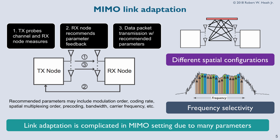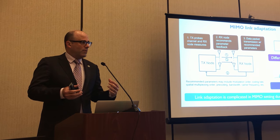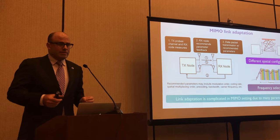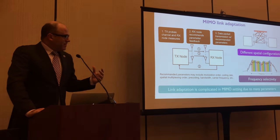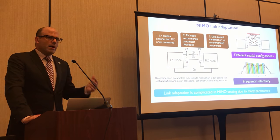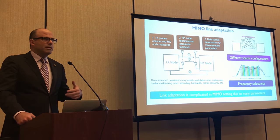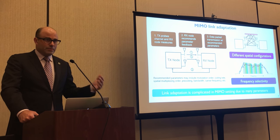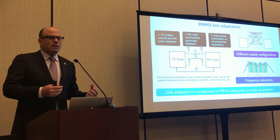In MIMO communications, this simple idea of link adaptation is actually much more difficult. I'm talking about MIMO systems like 802.11n or 802.11ac, where you're coding across the entire frequency band — not doing OFDMA like in 4G. You have frequency selectivity in the channels, so some subcarriers are good and some are bad. You also have MIMO, giving you the ability to do pre-coding with one, two, or three streams — so you can adapt the rank to the channel.